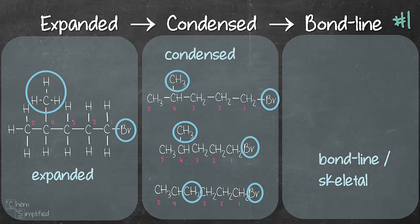Now we move on to bond line or skeletal structure. So we have five carbons we'll number it one two three four five and bromine on the first carbon CH3 on the fourth carbon and that's how it looks like. Very clean, very simple, very straightforward.